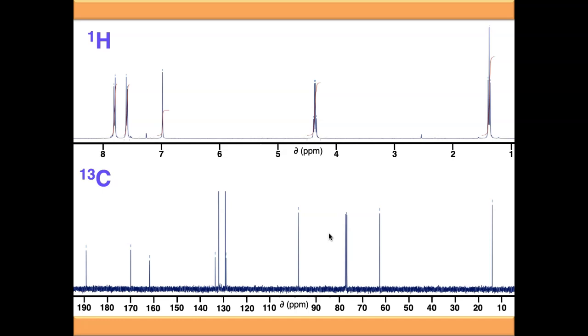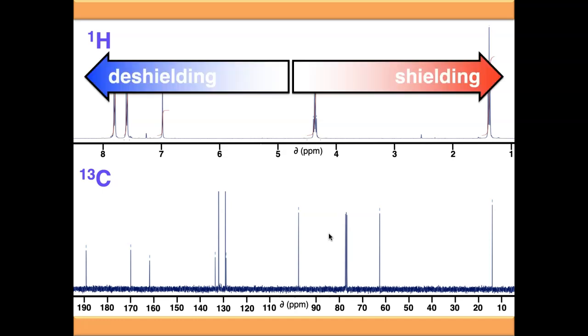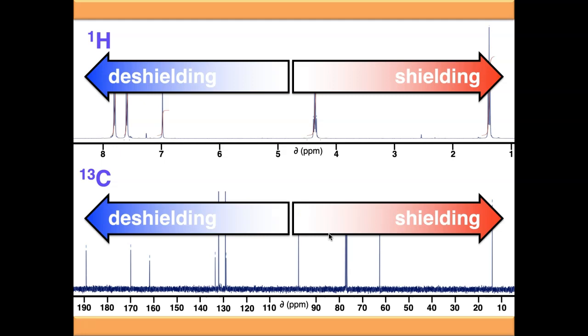But there are some similarities. I talked about chemical shift and the effects of shielding and deshielding. This is exactly the same on a carbon NMR as it is on a proton NMR. The effects that shield and deshield protons are the same as those that shield and deshield carbons. It's to do with the amount of electron density surrounding the nucleus in question.